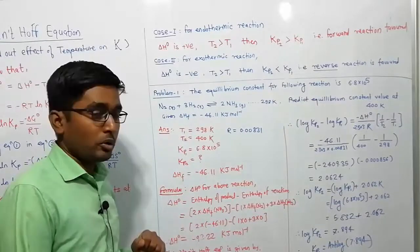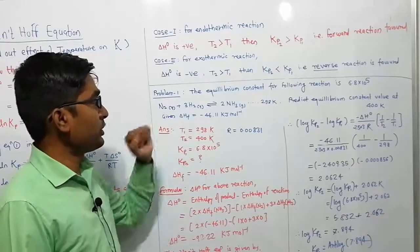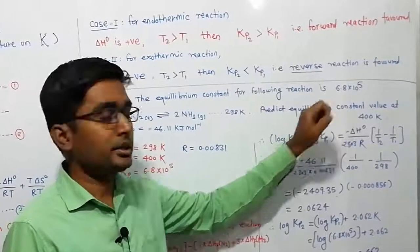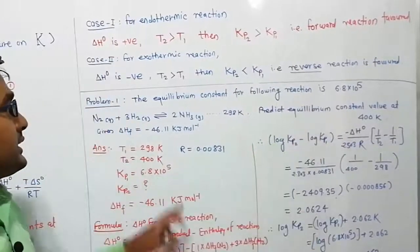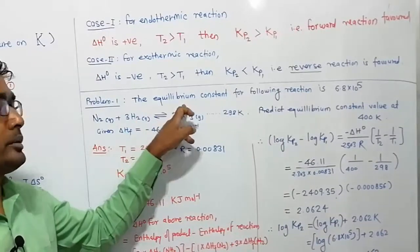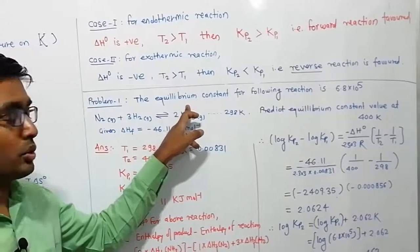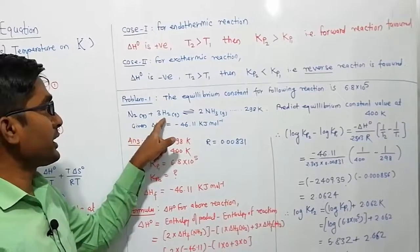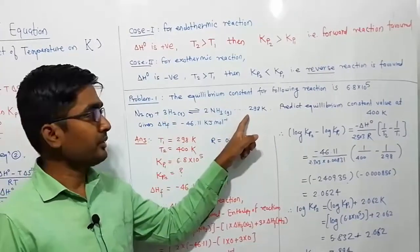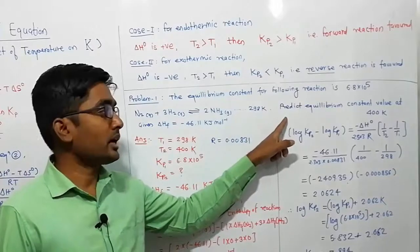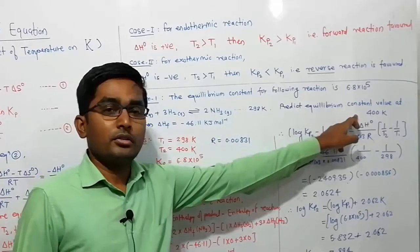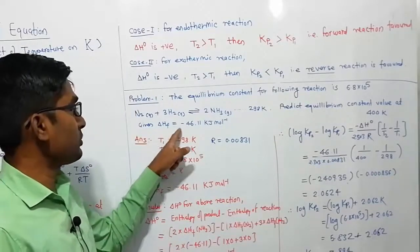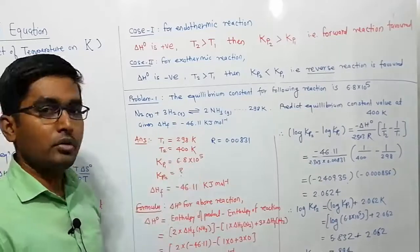Now let us discuss a problem on the Van't Hoff equation. The equilibrium constant for the following reaction is 6.8 × 10⁵ — it is dimensionless since it is a ratio of similar quantities. The reaction is the formation of ammonia from nitrogen and hydrogen at 298 K. We need to predict the equilibrium constant at 400 K. Given: ΔHf = −46.11 kJ/mol.